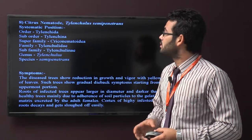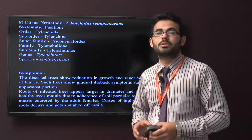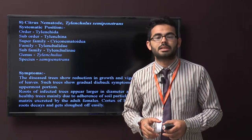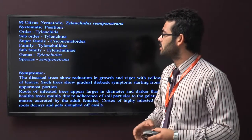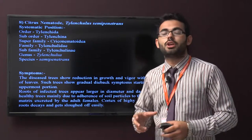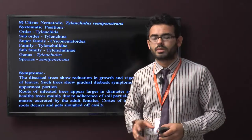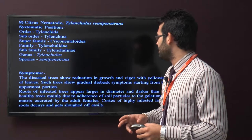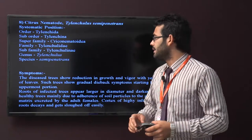Eighth is citrus nematode, scientific name Tylenchulus semipenetrans. Symptoms include reduction in growth and vigor with yellowing of leaves. Roots of infected trees appear larger in diameter and darker than healthy trees.